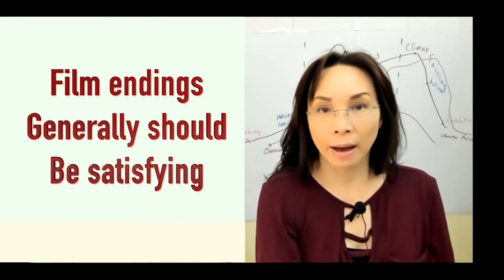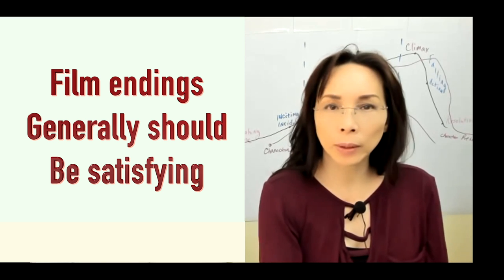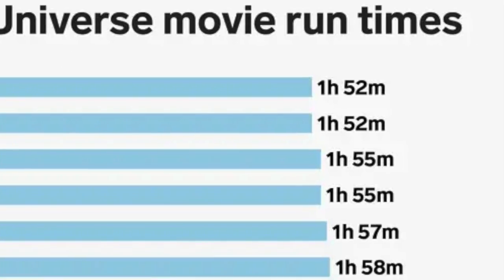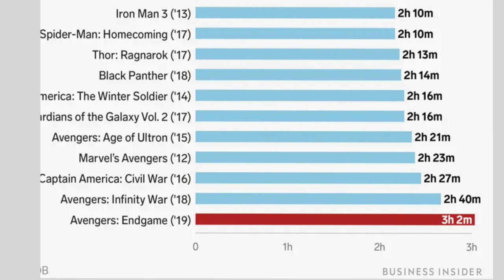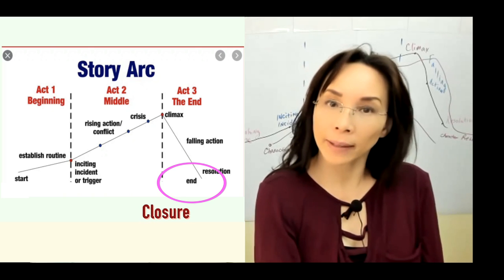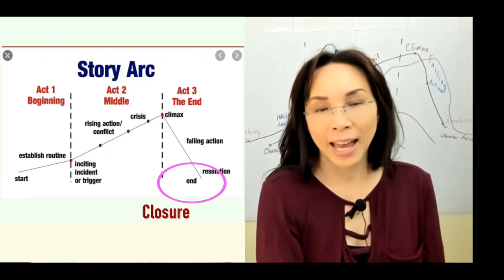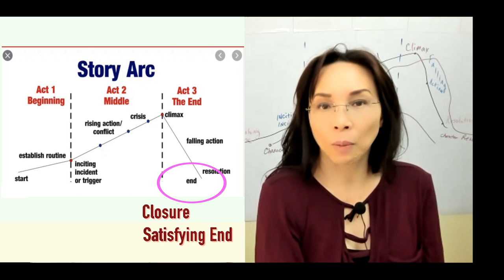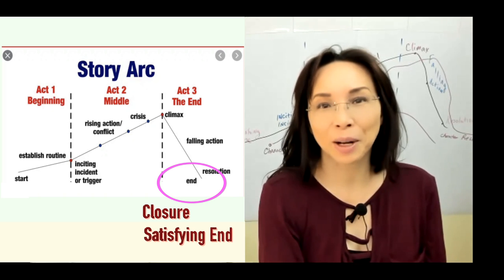You can absolutely have open-ended storylines, but the main storyline, or at least the main reason why your audience is sitting there for an hour and a half to two hours, should have some kind of conclusion that allows your audience to feel as though they have closure to why they were in that seat for an hour and a half to two hours to begin with. And they should be satisfied with what they've seen and what has happened to the main characters and situations that are set up in that feature.